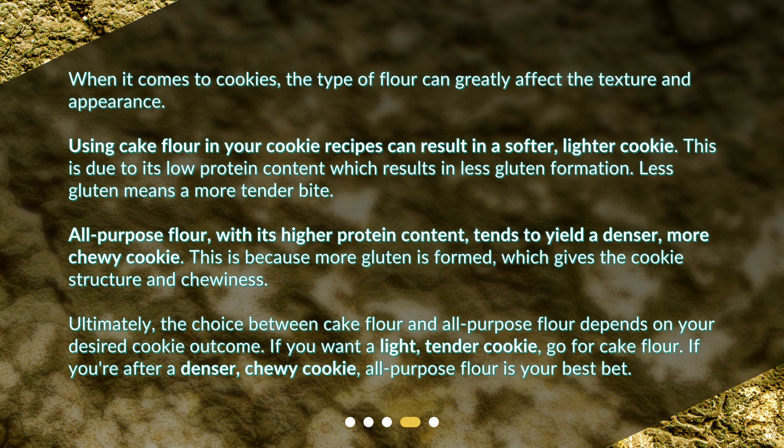Less gluten means a more tender bite. All-purpose flour, with its higher protein content, tends to yield a denser, more chewy cookie. This is because more gluten is formed, which gives the cookie structure and chewiness.